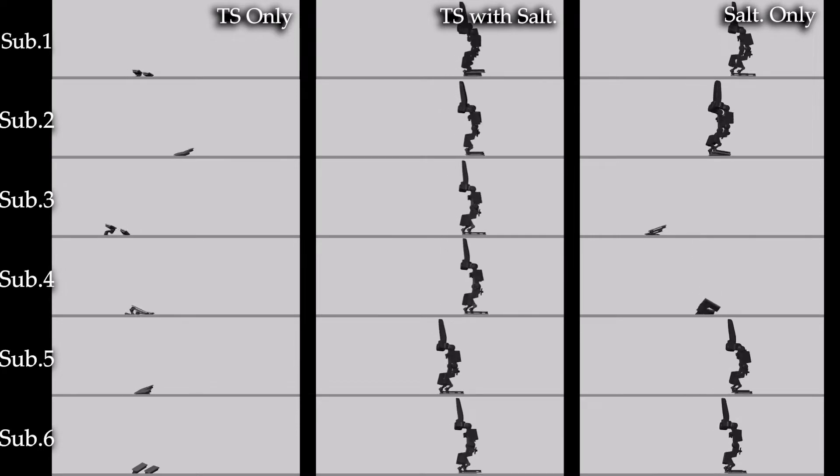Next, we generate and compare the gaits for six random subject models on the Atalante lower body exoskeleton in simulation. As with AMBER, only the gaits generated with the saltation matrix are able to walk for more than a few steps.